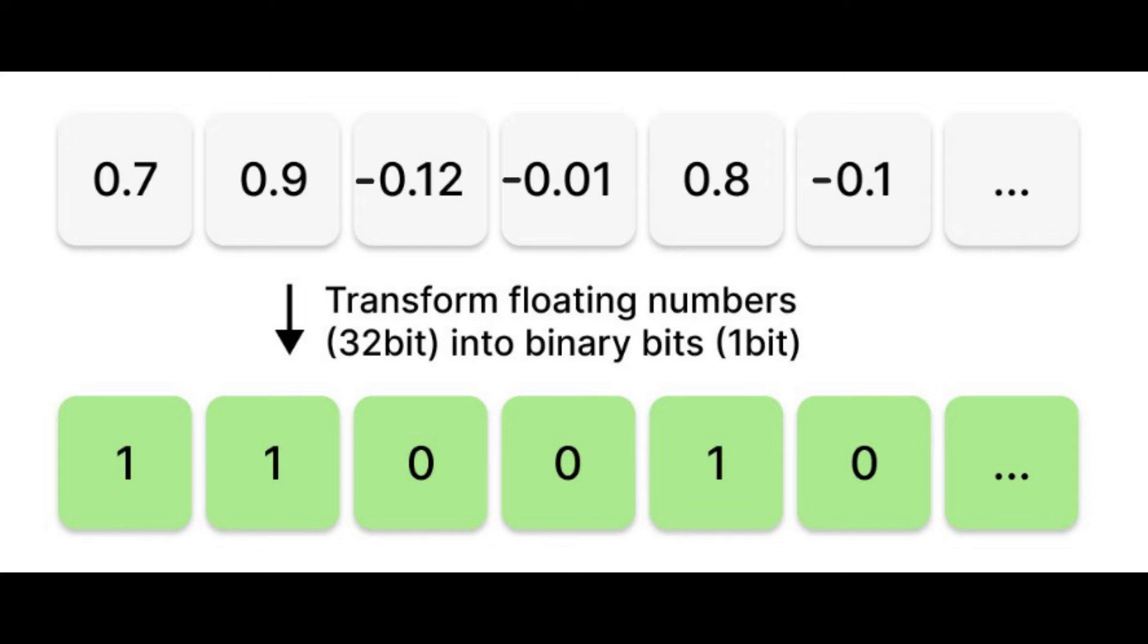Why is binary quantization particularly suitable for high dimensional vectors? Simply because in higher dimensional space, even with BQ, the vector can retain a high degree of information.